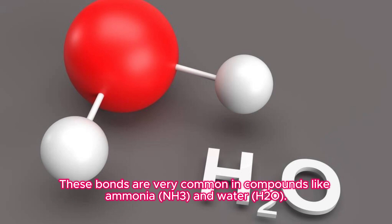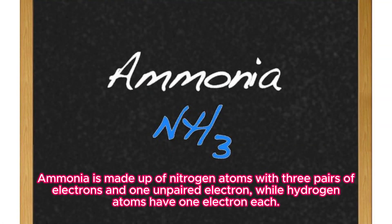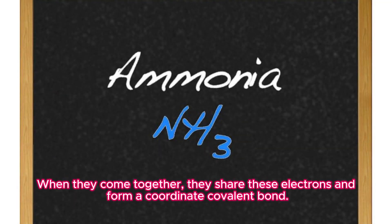These bonds are very common in compounds like ammonia NH3 and water H2O. Ammonia is made up of nitrogen atoms with three pairs of electrons and one unpaired electron, while hydrogen atoms have one electron each. When they come together, they share these electrons and form a coordinate covalent bond.